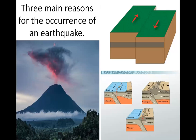There are three main reasons for the occurrence of an earthquake. The first is an earthquake caused by volcanic eruption. The second is an earthquake caused by strike or slip fault — when the plates are moving against each other.